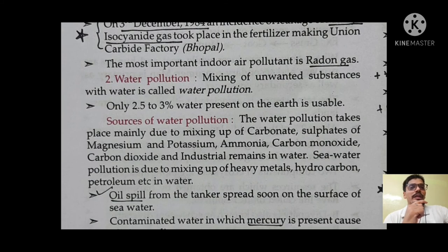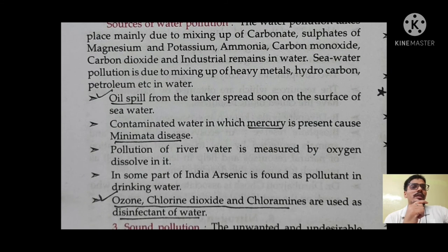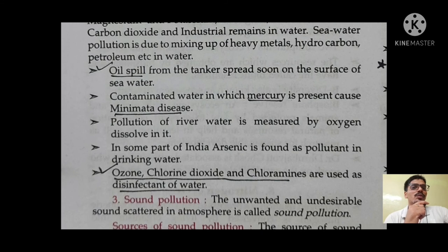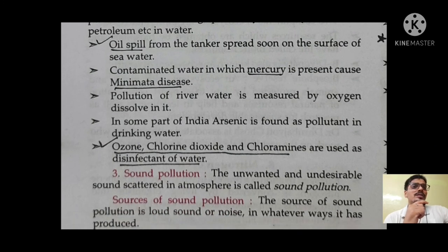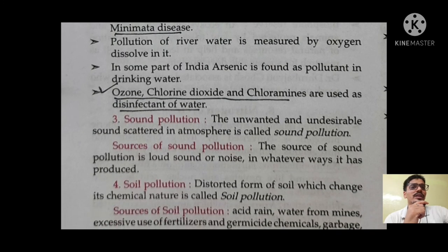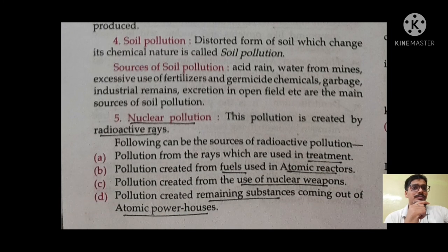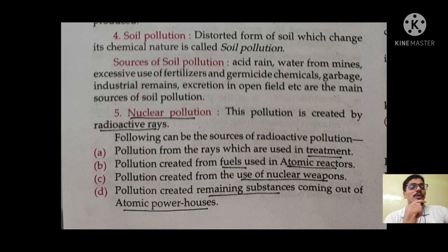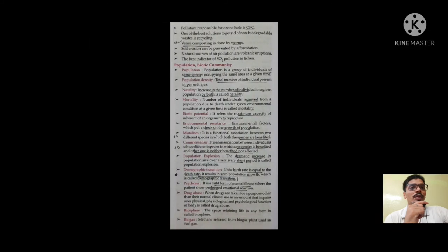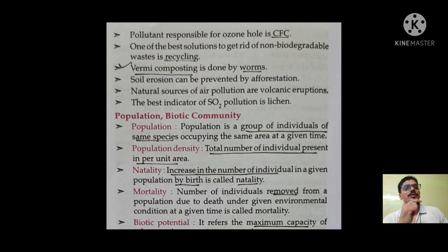The most important indoor air pollutant is radon gas. For oil spills that spread on the surface of sea water, several methods are used to absorb it — we covered oil spills in the environment lectures. Mercury causes Minamata disease, covered in the environment lecture. Ozone, chlorine, chlorine dioxide, and chloramines are used as disinfectants of water. Nuclear pollution has radioactive pollutants from rays used in treatment, fuels used in atomic reactors, use of nuclear weapons, and remaining substances from atomic powerhouses. Vermicomposting is done by worms. The pollutant responsible for the ozone hole is chlorofluorocarbons (CFCs).